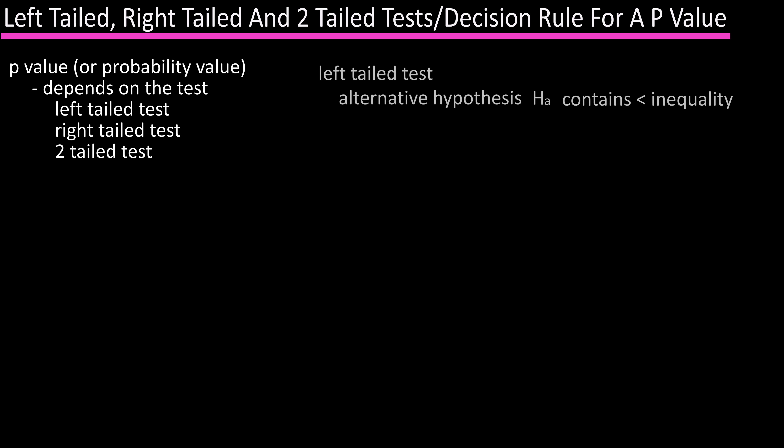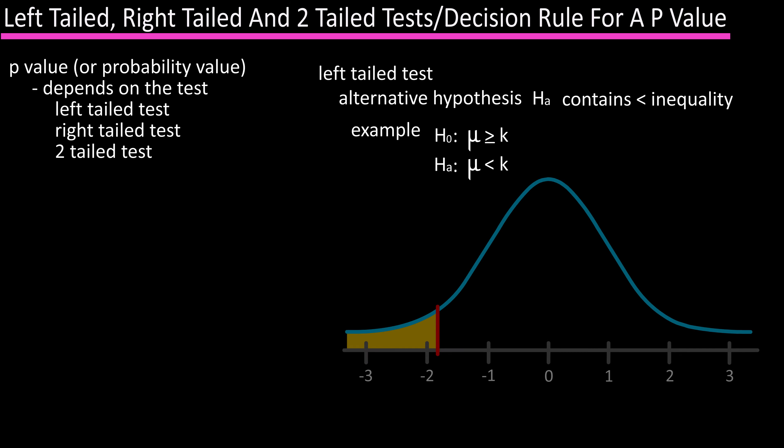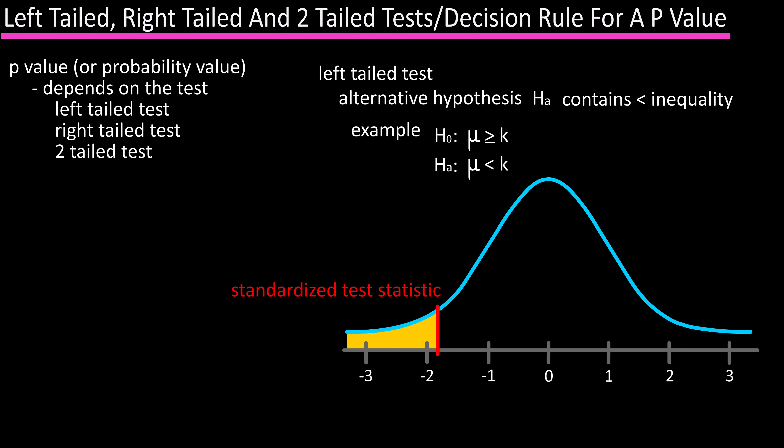For a left-tailed test, H sub A, the alternative hypothesis, contains the less-than inequality. So we could have for H sub 0: mu greater than or equal to k, where k represents a claimed value, and H sub A would be mu less than k. On the graph, the red line represents the standardized test statistic, and the area to the left of the line is the p-value.